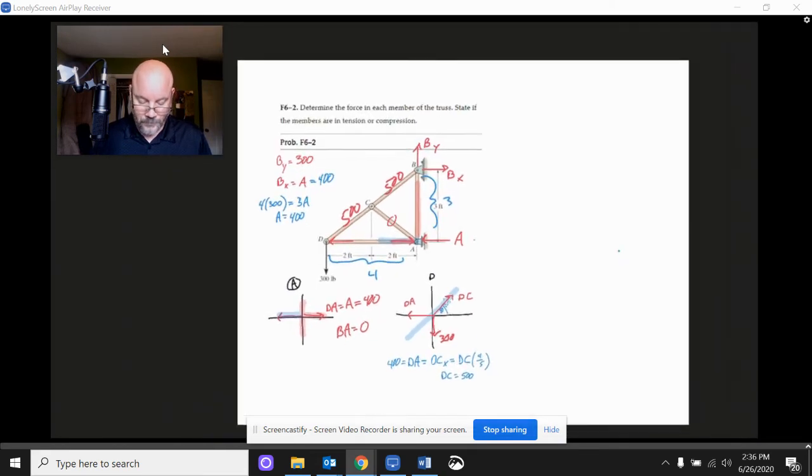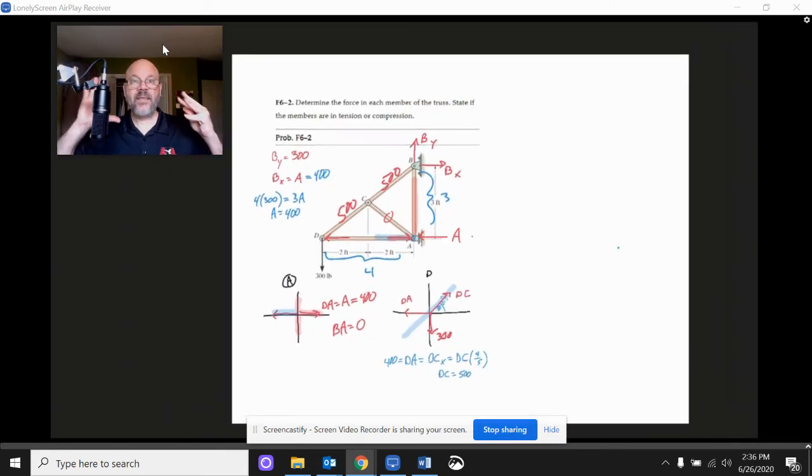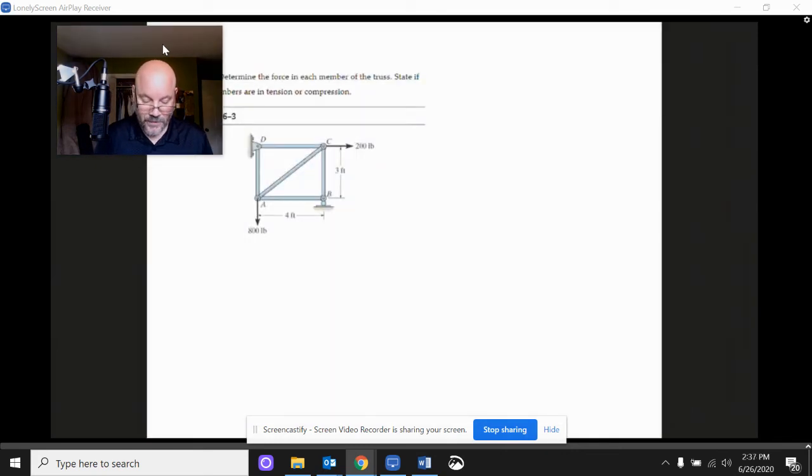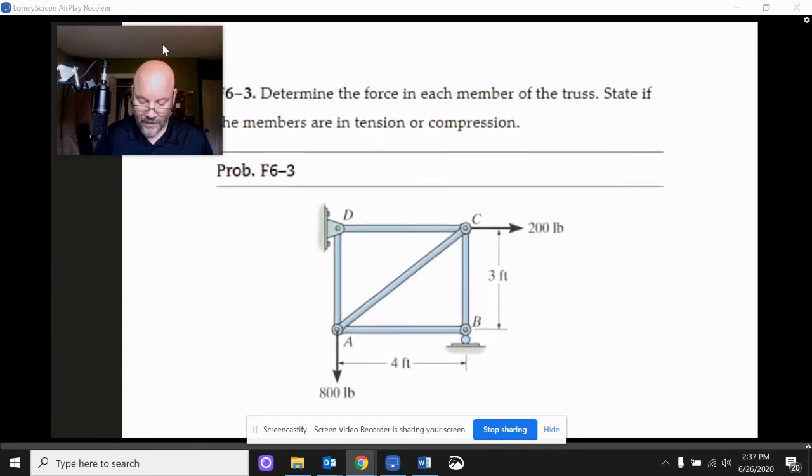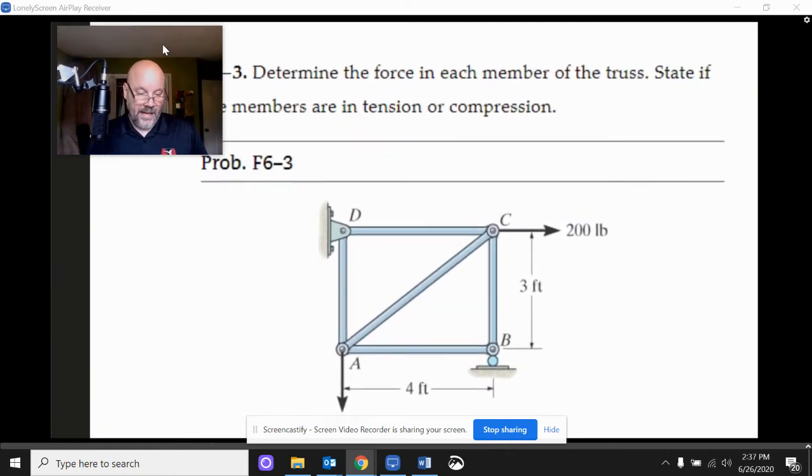Again, start by thinking about the thing as a whole, get your external forces, the applied, the reactive, then move inside, start with the joint. Just pick one, try to pick a simple one and move one joint to the next. All right. Now let's look at one that's pretty similar to it. Okay. Which is this guy. And just to give you a little preview in the last one, there were two pieces that were zero force members, two pieces that didn't really have anything to do with the loading. This one's going to have some of those also.